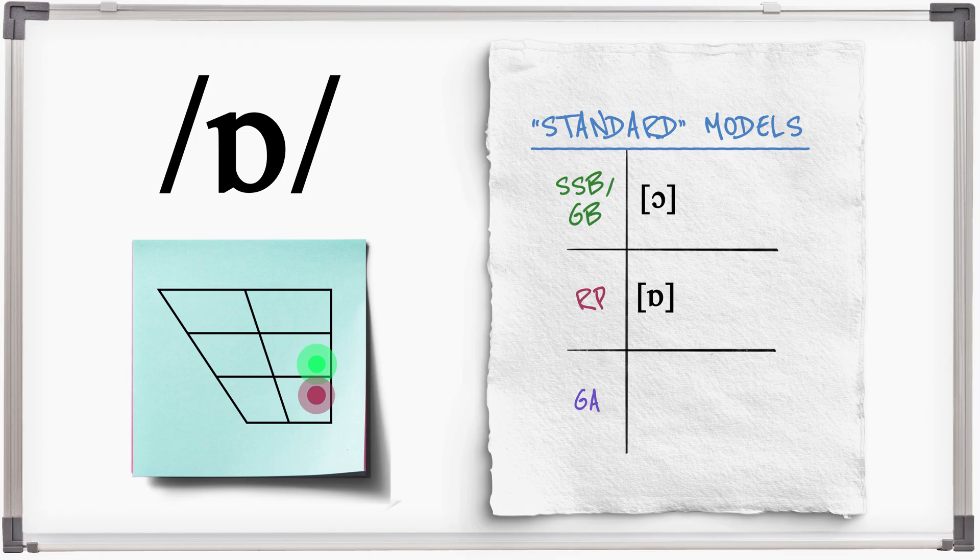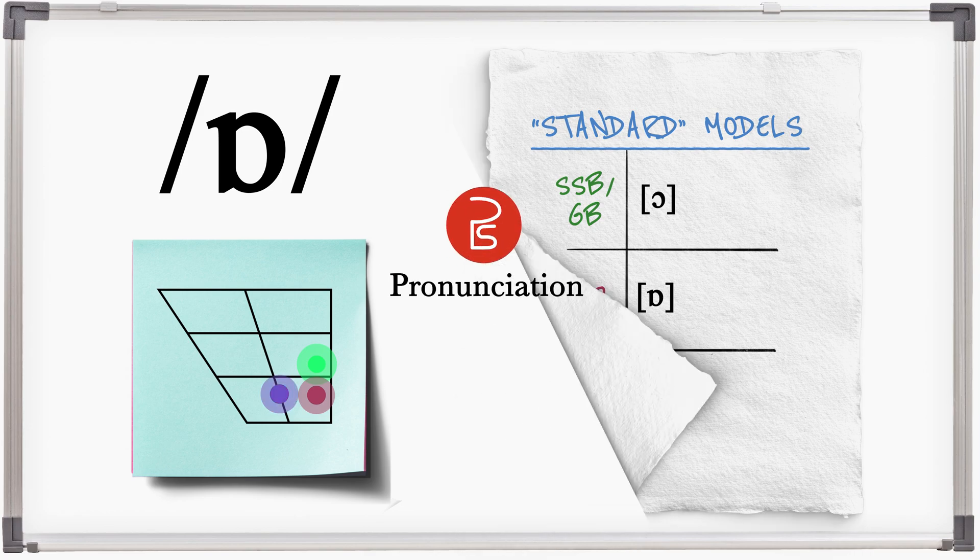In general American, this sound is not rounded. It merges with unrounded open vowel sound. O. Rock song.